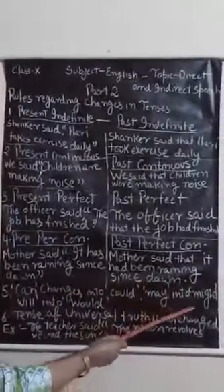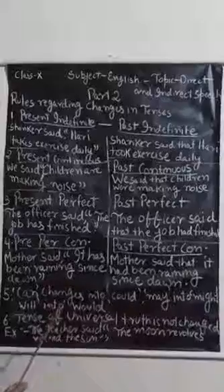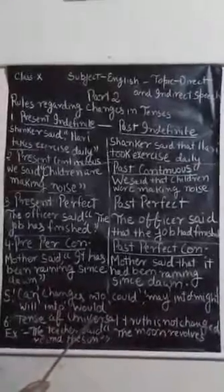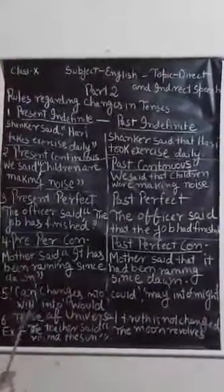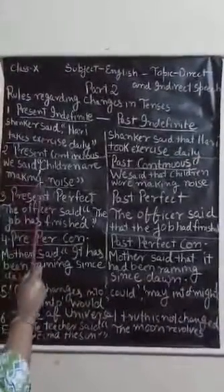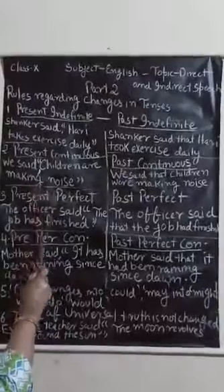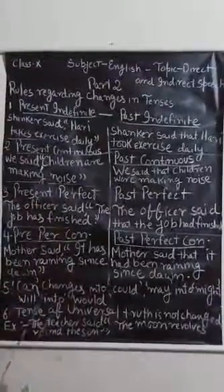May changes into might, will changes into would. So these are the rules regarding changes of tenses from direct to indirect.